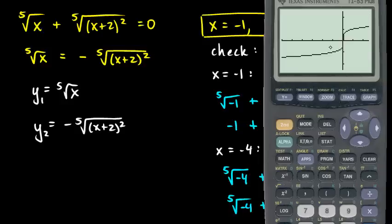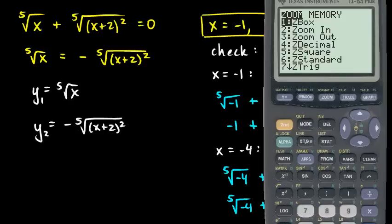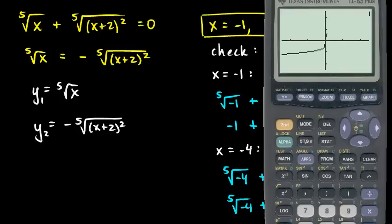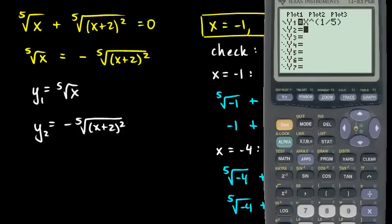With a standard zoom setting, you can see the fifth root function. Now let's graph y2 also. This will be the negative of x plus 2, close parentheses, squared, close parentheses, to the power of one-fifth.